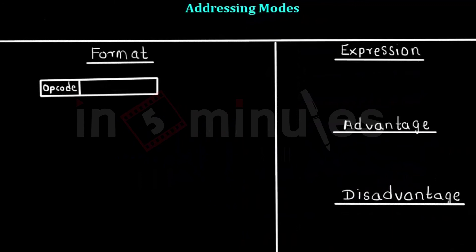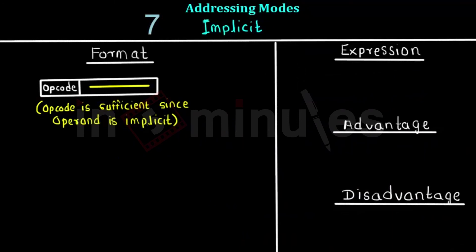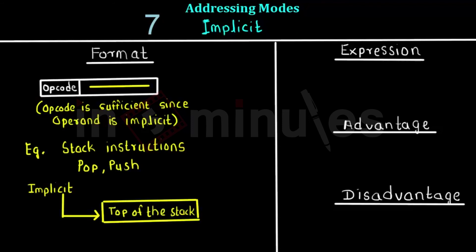The last addressing mode we are going to see is the implicit addressing mode. In this mode, there is no operand specified in the instruction — the operand is implicit to the particular instruction, so the opcode alone is sufficient. For example, stack instructions like pop and push are used here.